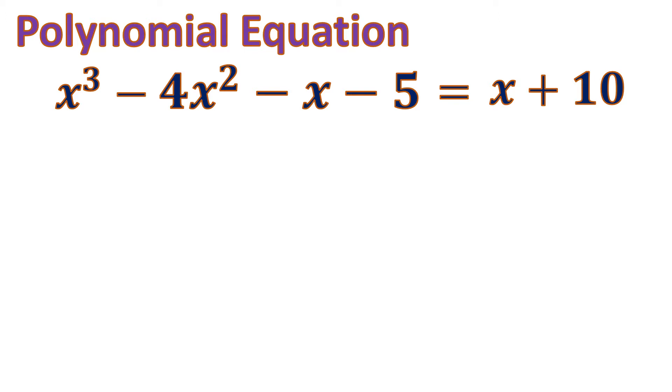So a polynomial equation is composed of two polynomials which are equal, which is assumed to be equal.